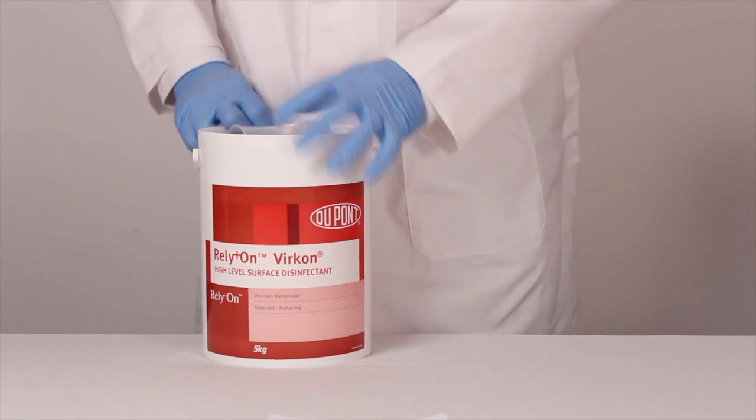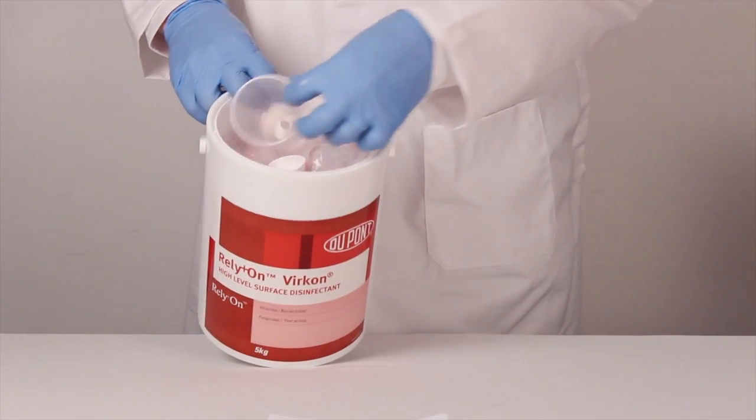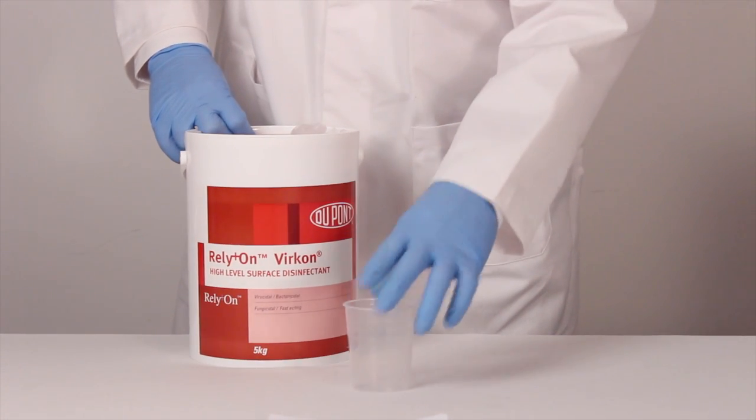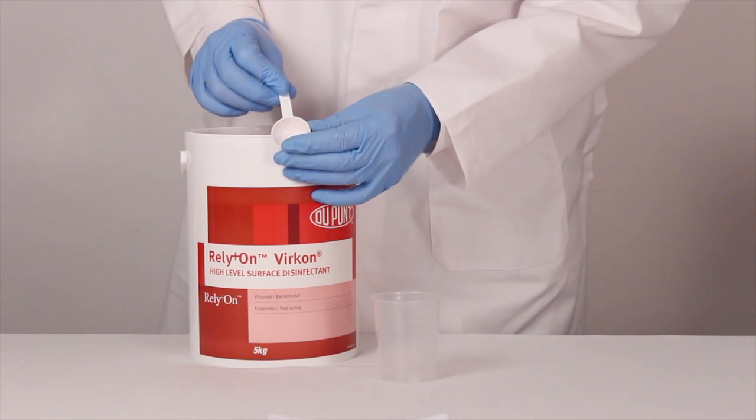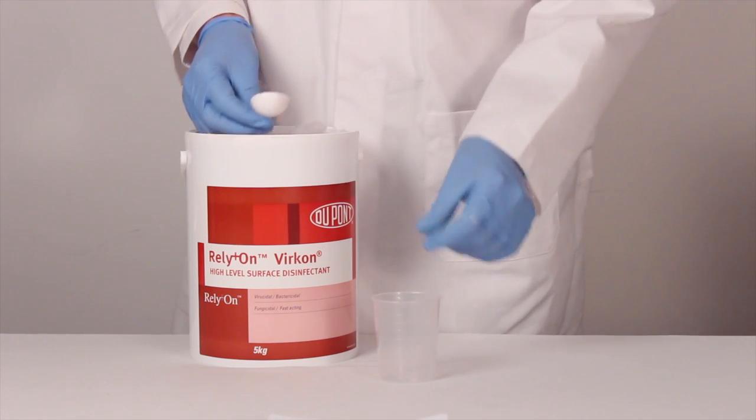Inside of the drum itself you can see it includes a plastic measuring cup which is used for larger quantities. Also inside is a 10 ml scoop which we will be using today to make up our 1 liter.